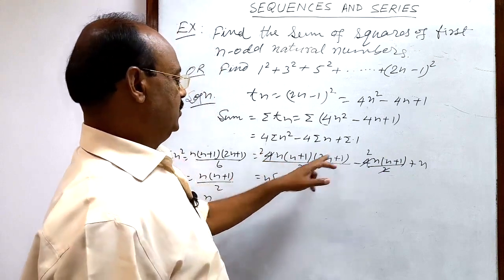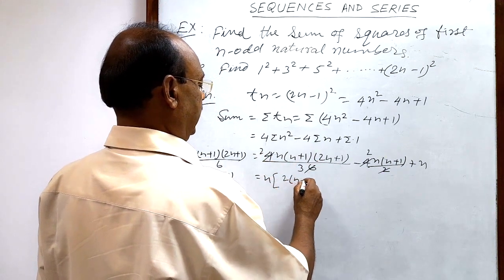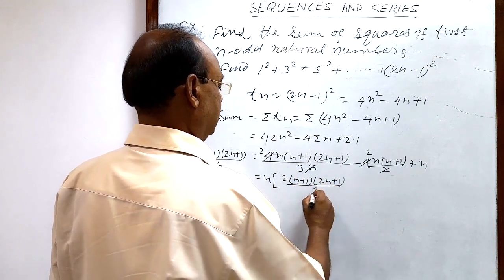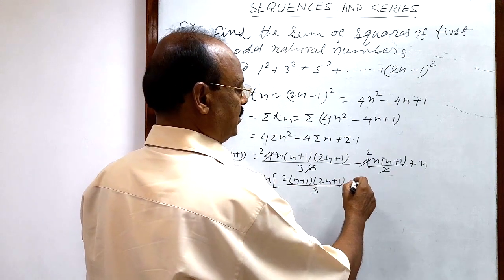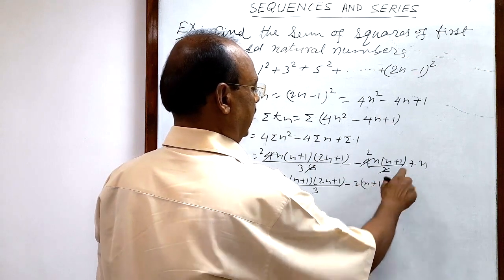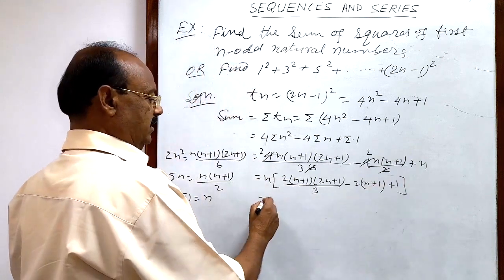In the first term we are getting 2(n+1)(2n+1)/3. And in the second term we are getting 2(n+1) and n has been taken, so this is 1. Now, let us simplify it.